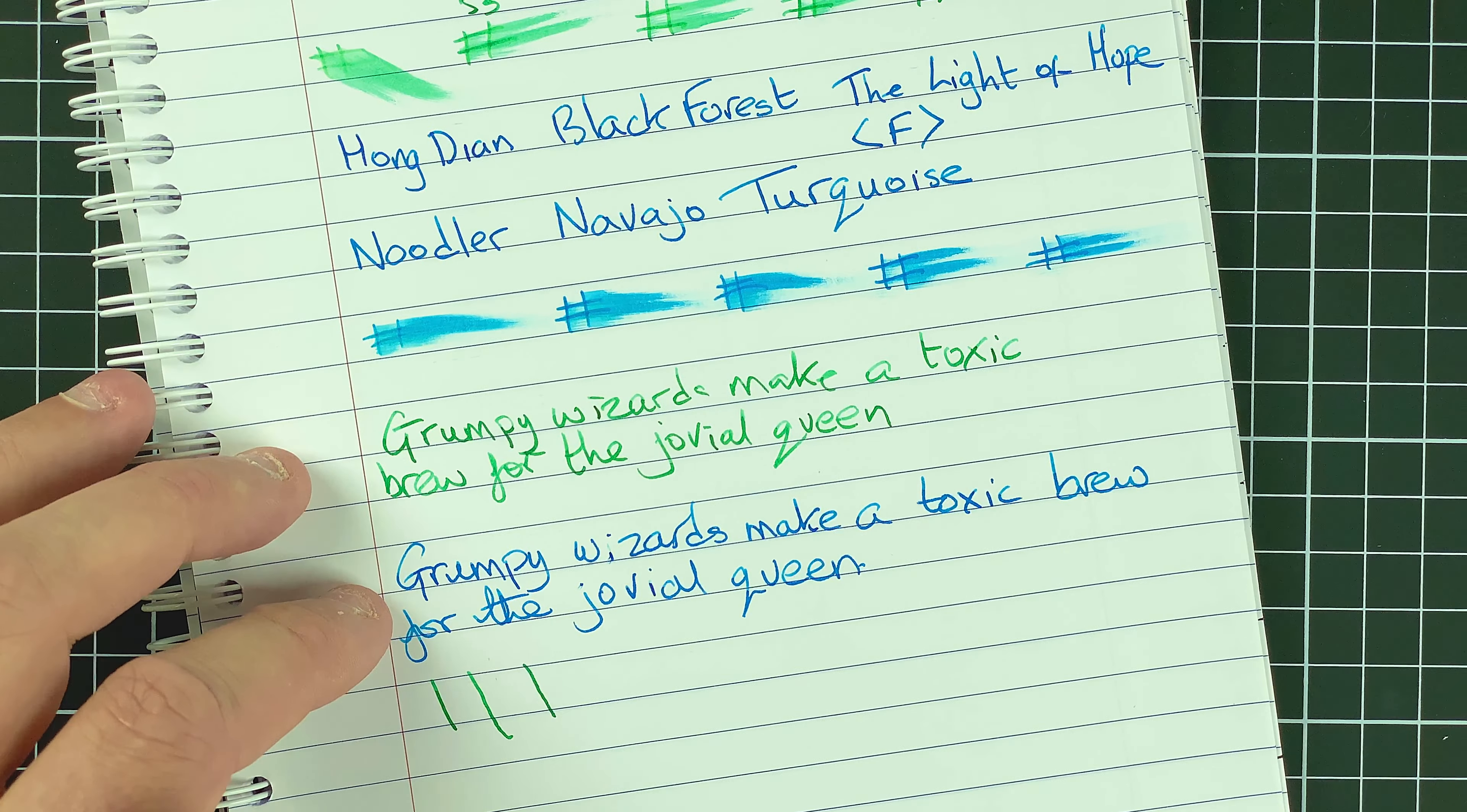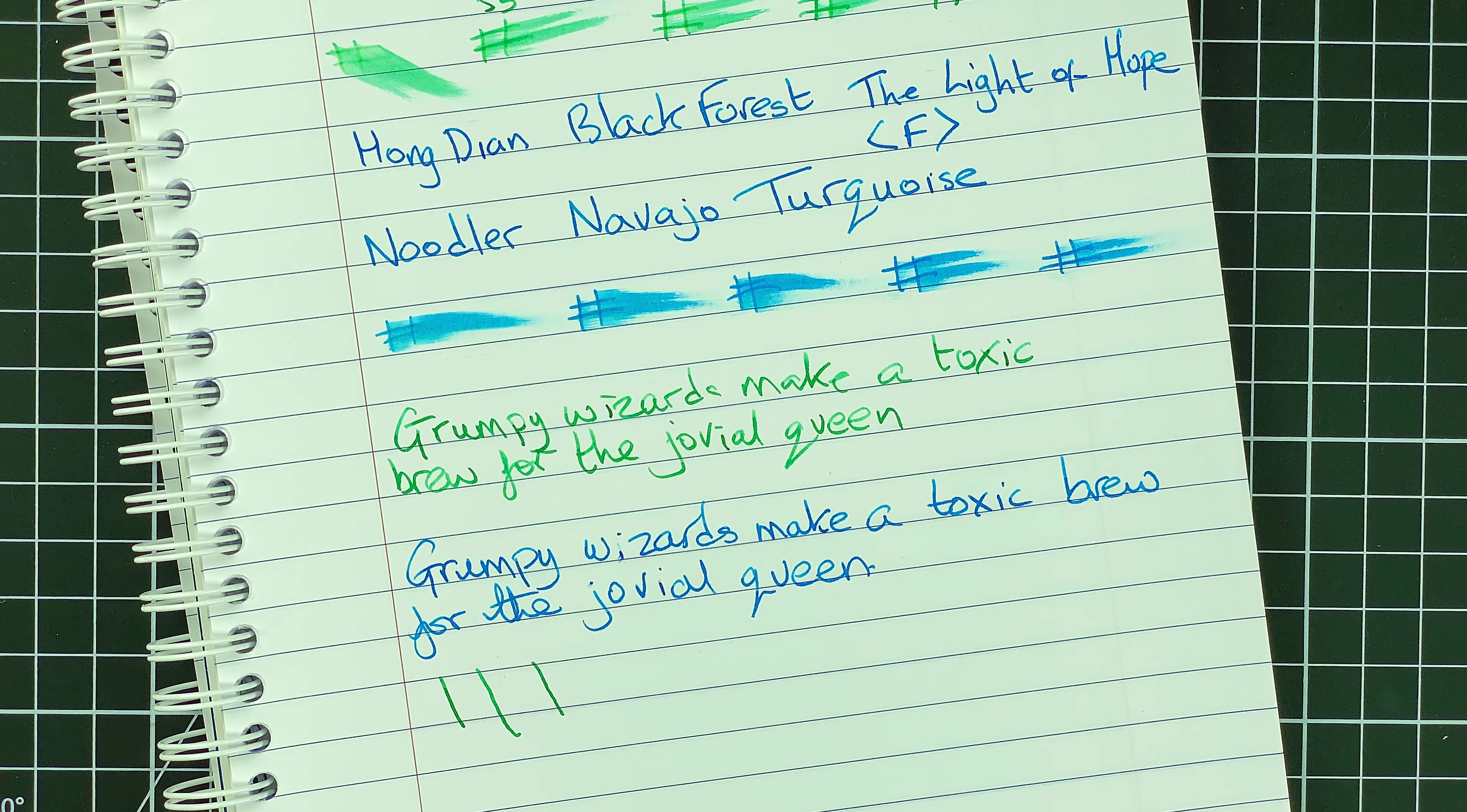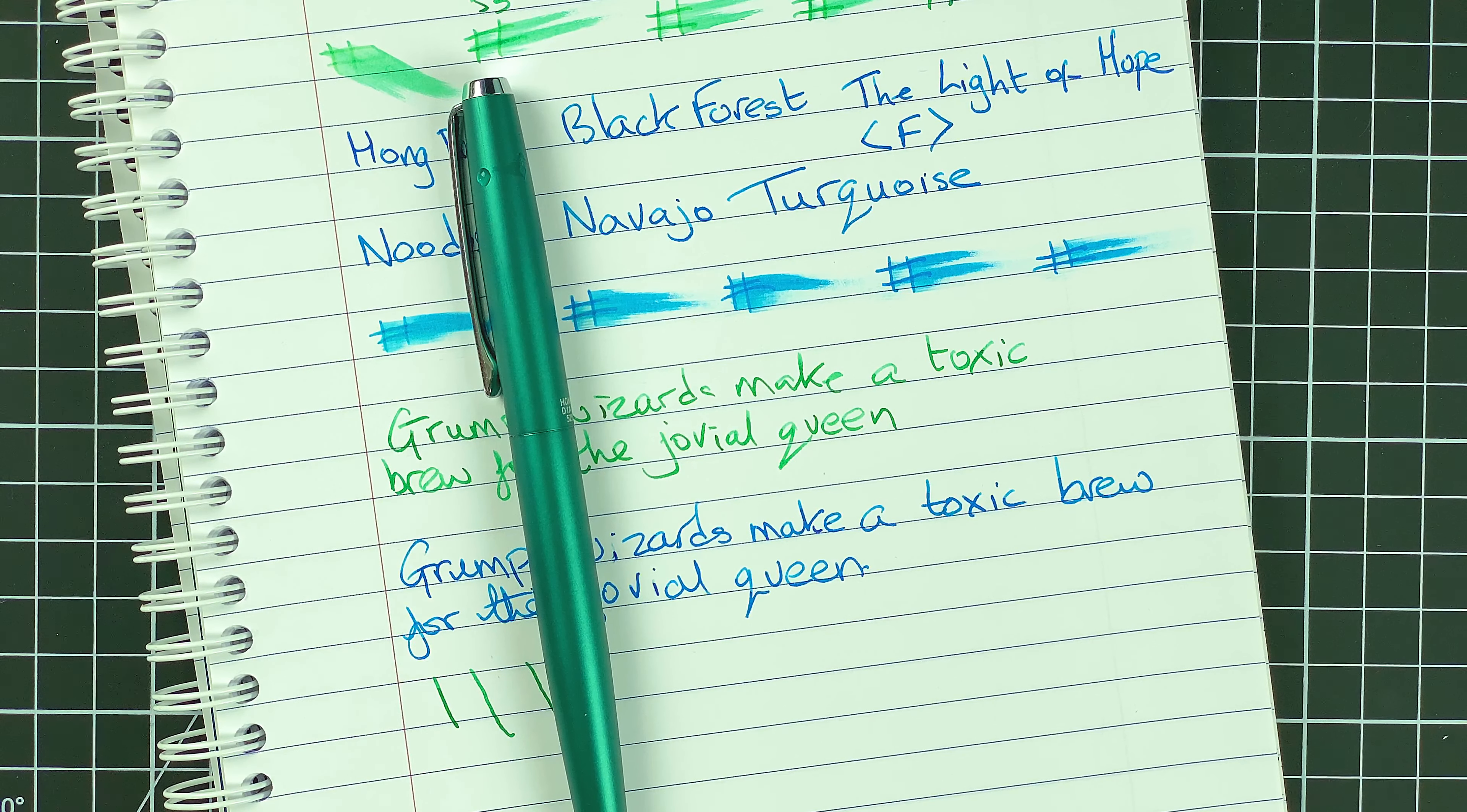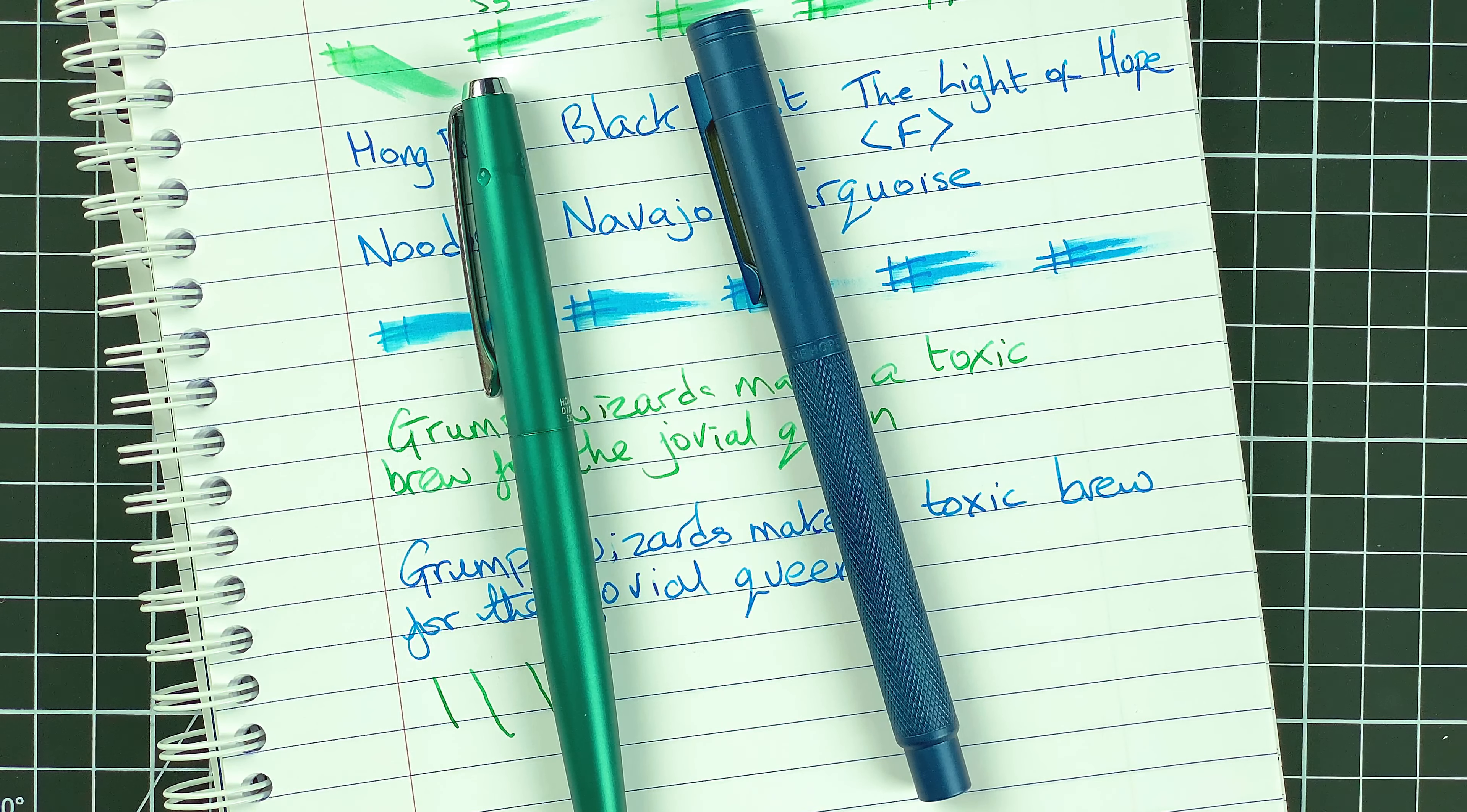Light of Hope, again, it writes nice. I'm not seeing a lot of shading there. So unfortunately, I can only give that a 7 out of 10. Value for money. Well, they were both about 23 Australian dollars. So roughly the same price. 525, I'm going to give that maybe a 7 out of 10. Again, it's the nib which is making me a bit uncomfortable. Whereas the Light of Hope, well, you may have already noticed I really like this pen. So I'm going to give that an 8 out of 10.